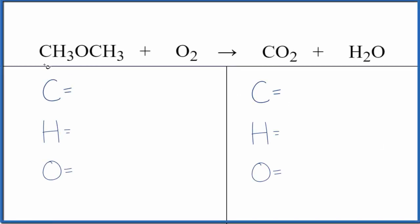Let's write the balanced equation for CH3OCH3 plus O2. This is dimethyl ether, and we have the two methyl groups, that oxygen in the middle, that makes it dimethyl ether.